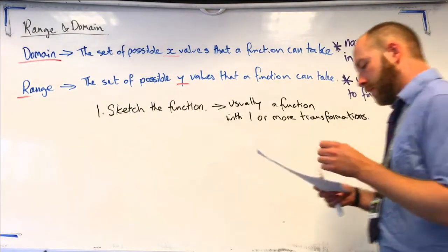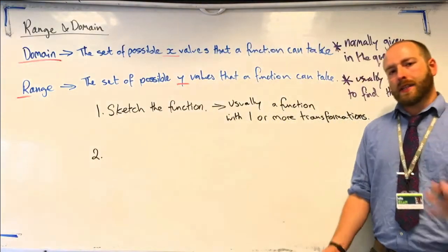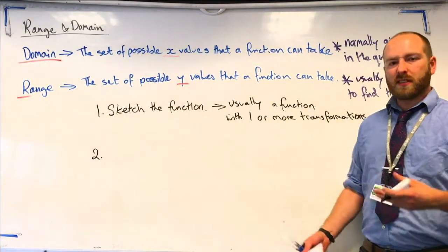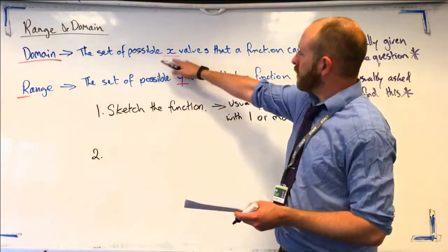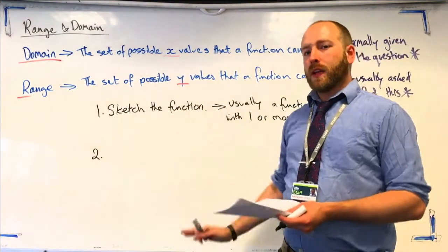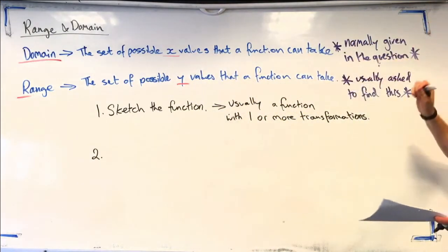Part two, or step two, is going to be apply the domain to that sketch. So, basically cross out anything that you're not allowed. When the domain is set of the x values, so we're going to cross out any x values that aren't included in the domain that the question gave us.